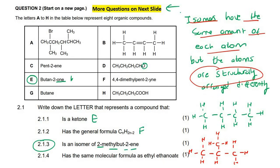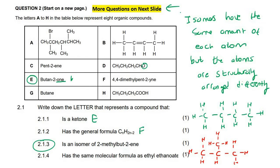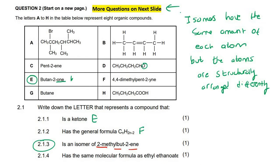Remember, we get three different types of isomers: chain, functional, and positional. So what we are doing here — they're saying it is an isomer of 2-methylbut-2-ene. Let's quickly go draw that.